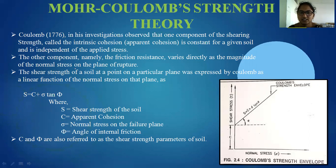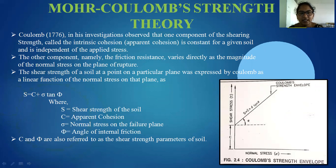One component of the shear strength, called the cohesion, is constant for a given soil and is independent of the applied stress. The shear strength of a soil at a point on a particular plane was expressed by Coulomb as a linear function of the normal stress on that plane. This is the failure envelope, and the graph is drawn between normal stress and shear stress. The equation is: S is equal to C plus sigma tan φ.